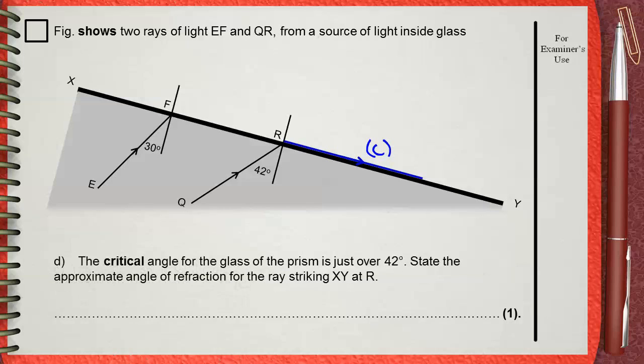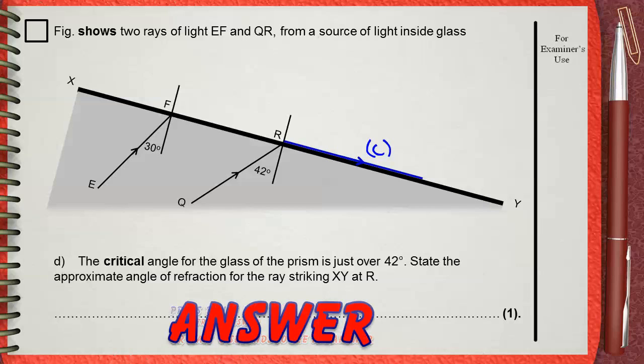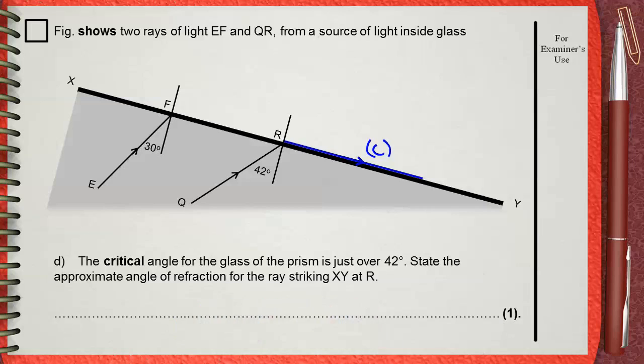The critical angle for the glass of the prism is just over 42. State the approximate angle of refraction for the ray striking XY at R. We just explained before what happened. QR is falling from denser medium with an angle that is about or nearly equal to the critical angle 42 of glass. So, this is the angle of incidence 42.